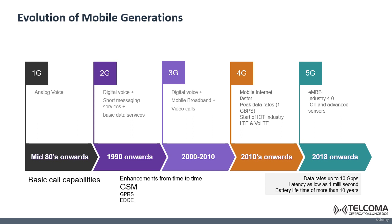EDGE offered high speeds of around 135 kilobits per second and it continued to be used on many mobile networks even till today, as it satisfies the basic needs of data speeds for users in different parts of the world. Then we had the introduction of 3G, or what is called UMTS — Universal Mobile Telecommunication System — which brought a better mobile internet experience and basic video calling, and was one of the main reasons for the revolution in mobile app development.